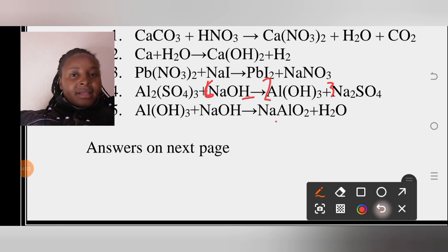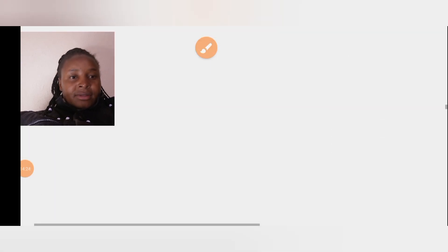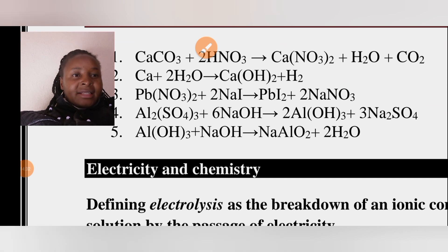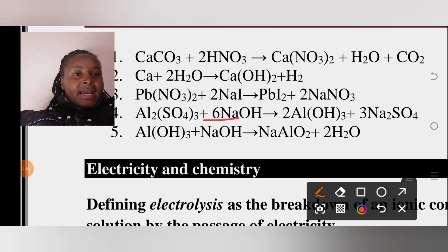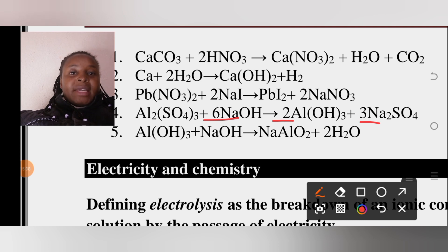For the sake of time, since the video is getting long, let's go to the pre-prepared answers on the last slide. We were on the right track: 6 NaOH + Al₂(SO₄)₃ → 3 Na₂SO₄ + 2 Al(OH)₃, with the final equation fully balanced. The last one involving aluminium hydroxide and sodium hydroxide is also balanced. That's it for stoichiometry — see you in the next topic on electricity and chemistry!